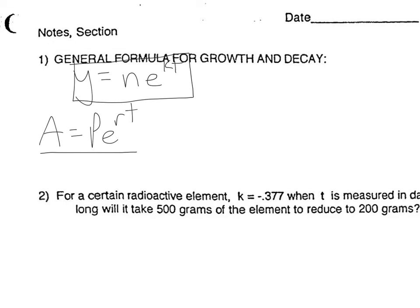With any formula, it's irrelevant unless you know what everything stands for. Just like in the PERT formula, the Y value is the ending amount. The N value — just like P is principal in the PERT formula, what you start with — N is the beginning amount, that's what you initially start with.